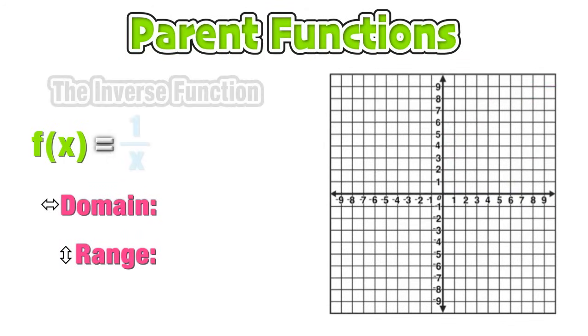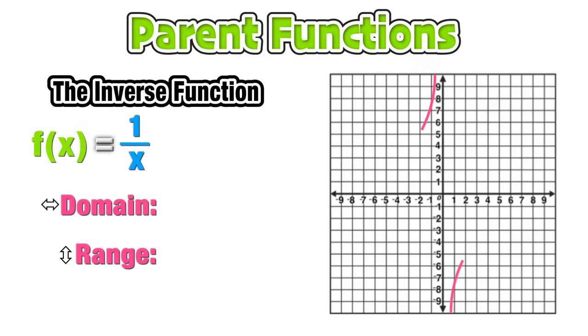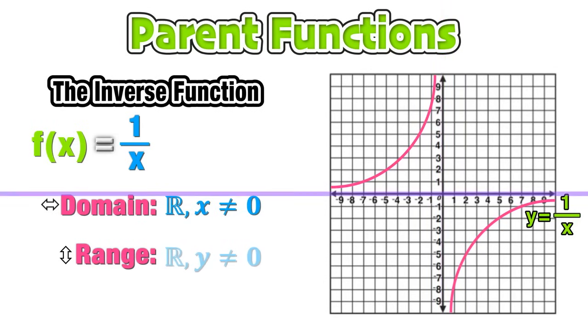Our last parent function is the oh so strange inverse function, f(x) = 1/x. Notice that there is a vertical asymptote at 0, so the domain for this function is going to be all real numbers except for 0, x cannot equal 0. There is also a horizontal asymptote at y = 0, so the range of this function is all real numbers except that y cannot equal 0. These asymptotes occur because we know that we cannot have 0 in the denominator, so x can never equal 0.